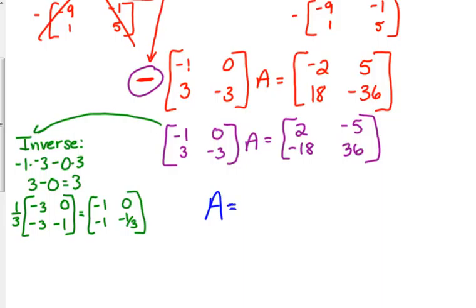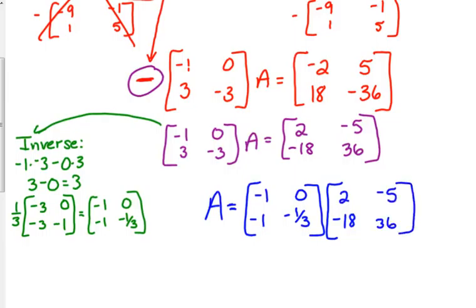This is very important. Since the order of matrix multiplication matters, the inverse is always going to be listed first. And then, we will list the matrix that was already on that side. And then, we can multiply.